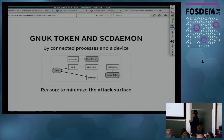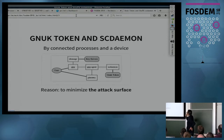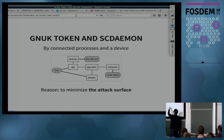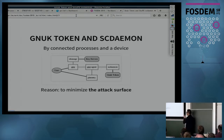This is a picture of the structure of GNU PG processes and the device. We have multiple software components: GPG front end, pin entry, GPG agent, directory manager, SCD daemon, and the GNUK token. The major reason why we have many processes, software components, and a hardware component is to minimize the attack surface — this is the most important point.